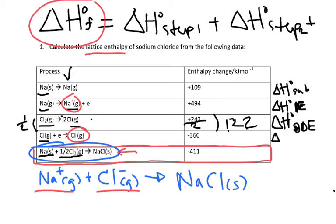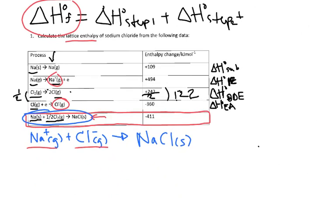And this is the delta H of electron affinity because chlorine is gaining an electron. So we know that the sum of these plus the lattice energy is going to equal the heat of formation.